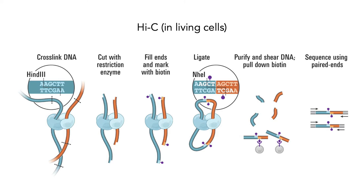To actually perform this analysis, the critical thing is that you must work with living cells, since you're looking at the 3D arrangement of DNA. The first step is to cross-link the DNA, often using formaldehyde, which covalently links DNA that is physically adjacent in three-dimensional space. You then cut with a restriction enzyme to break the DNA into much smaller fragments — you don't want really long stretches of DNA, just covalently joined bits that are not particularly long.